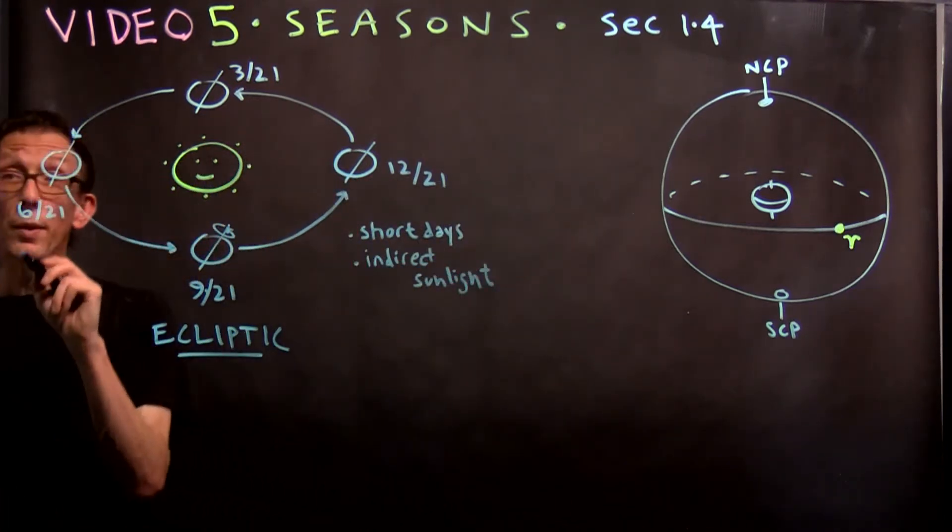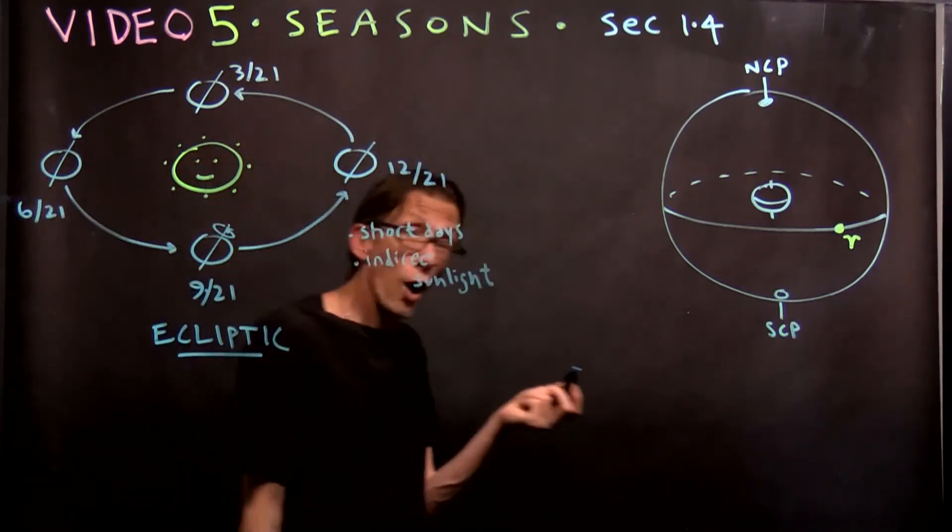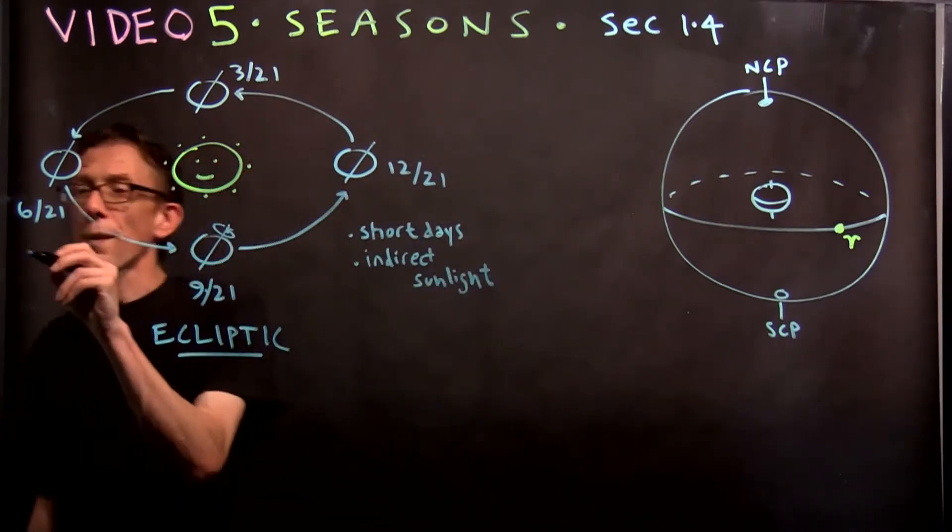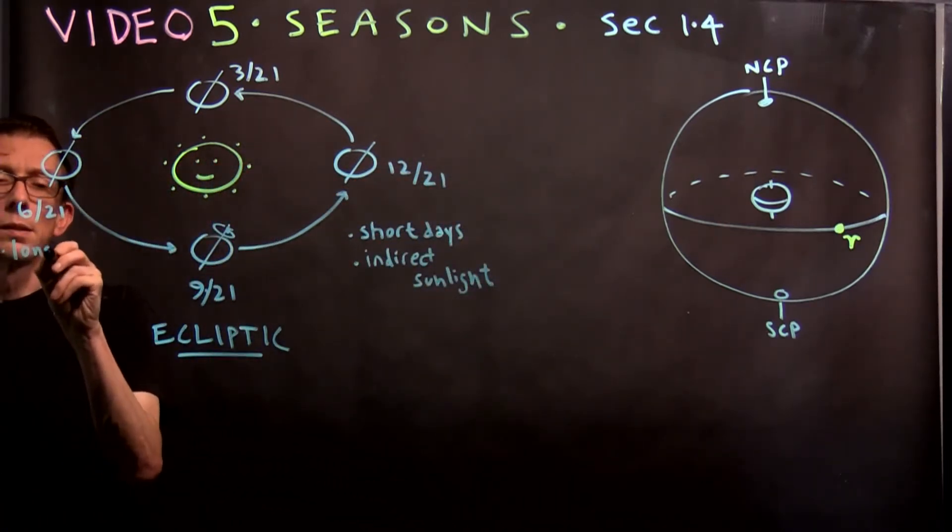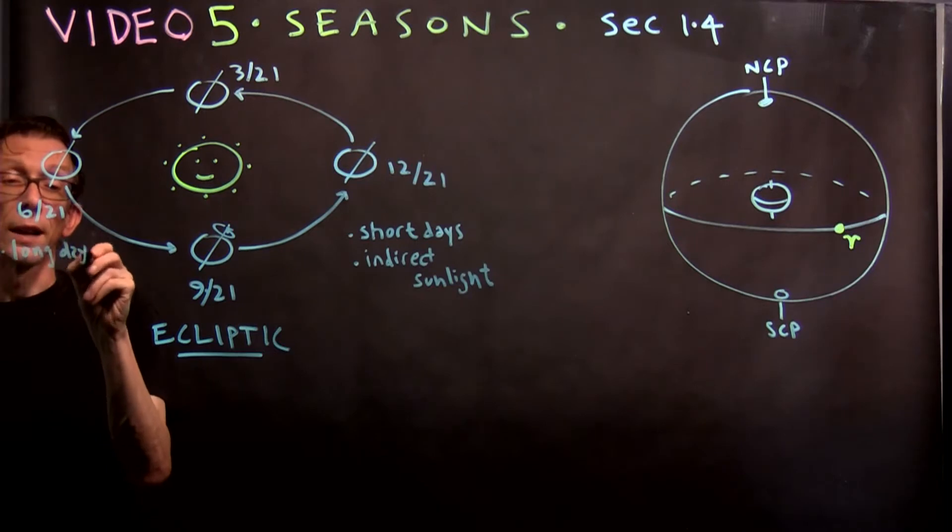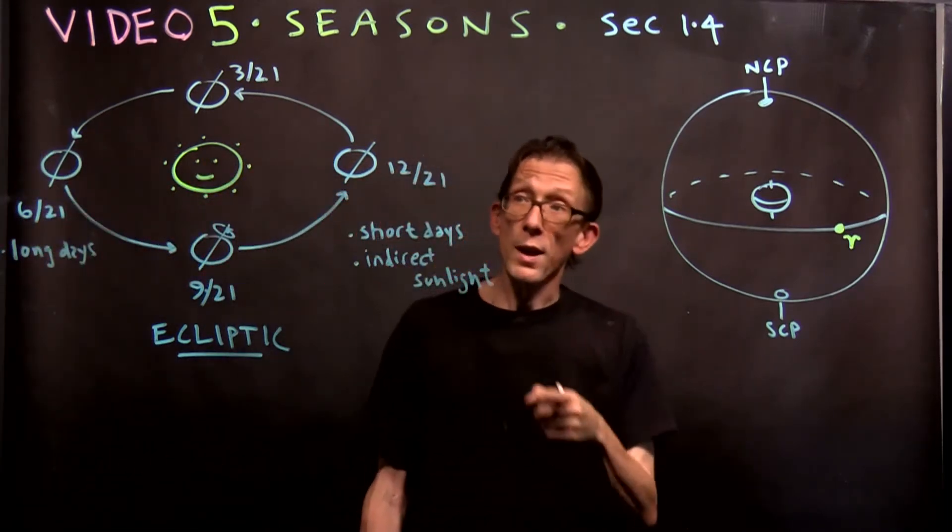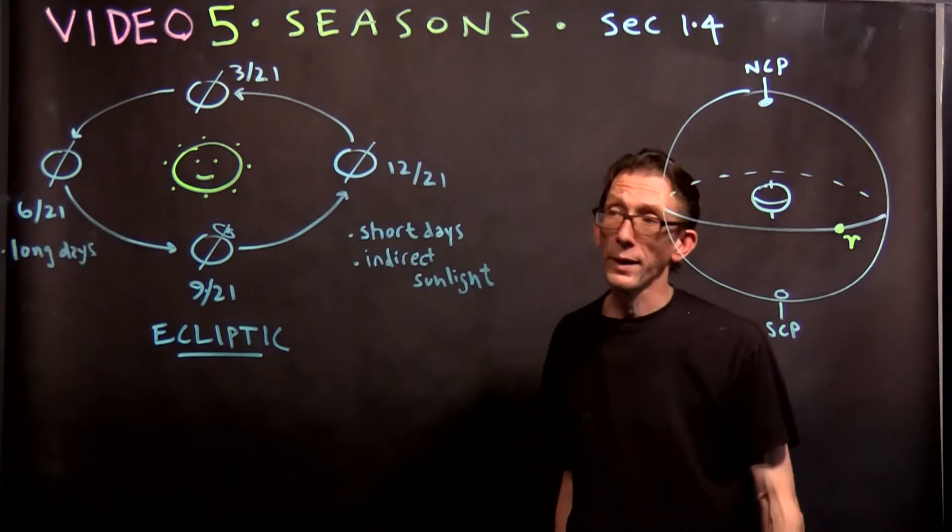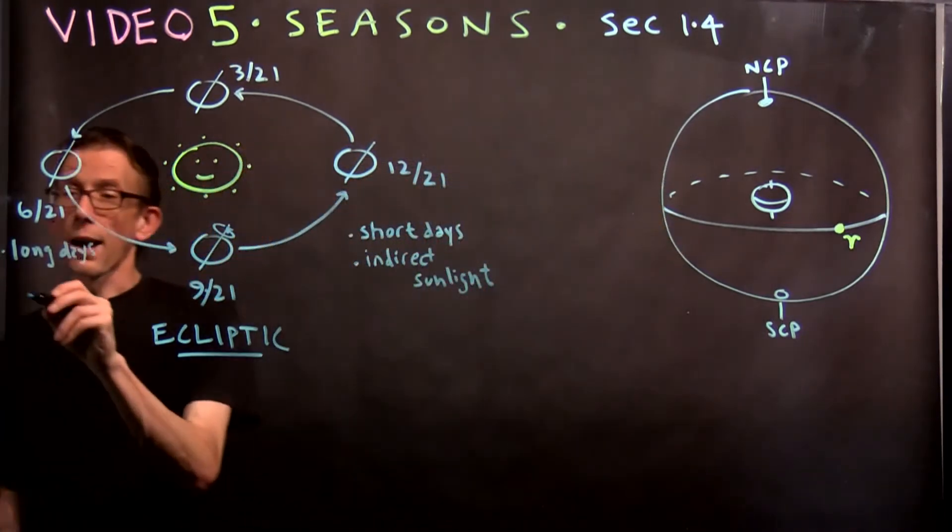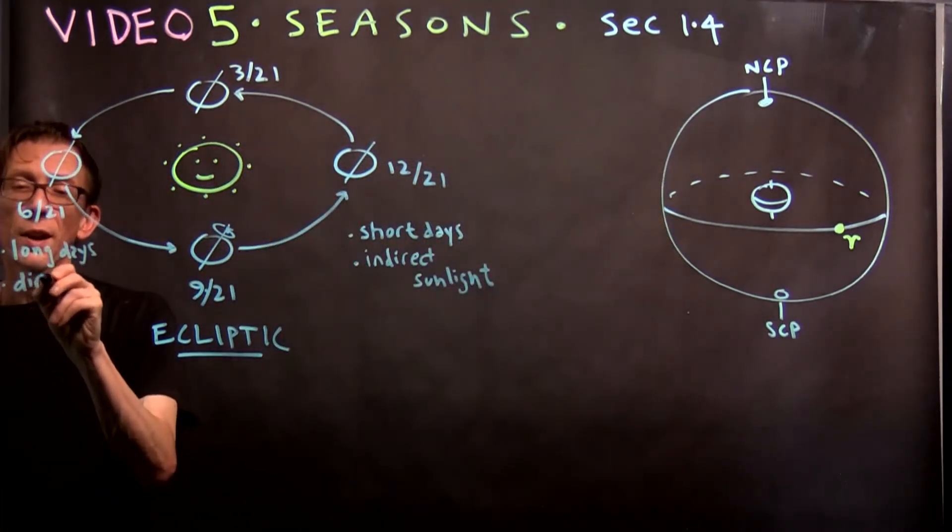In the summer, it gets really high up. But in the winter, it stays kind of low on the horizon. So the indirect sunlight and the days are short. The sun rises late and goes down early. We all know this from experience.